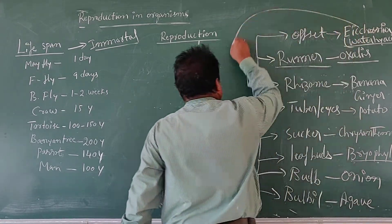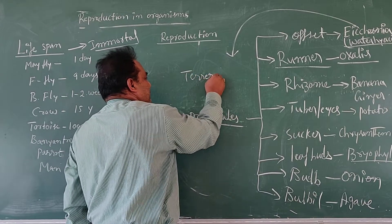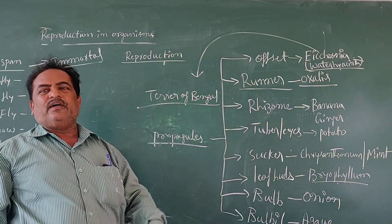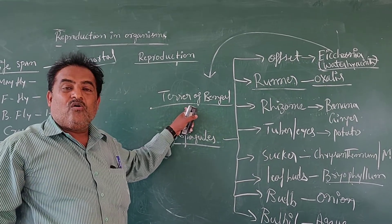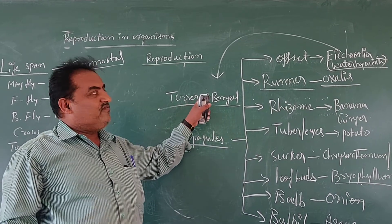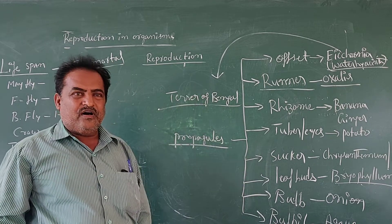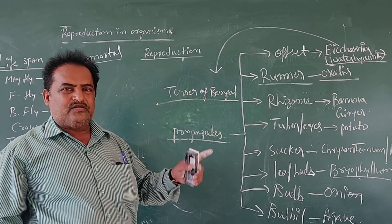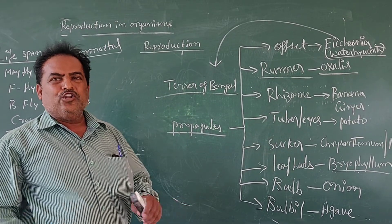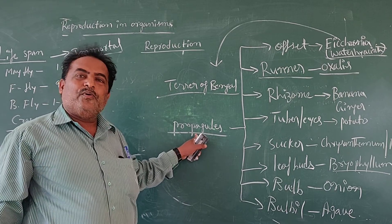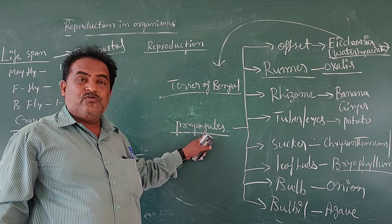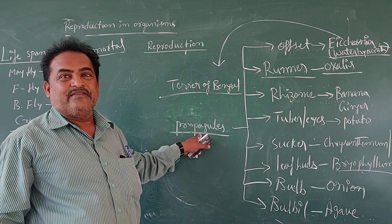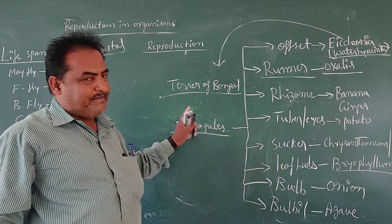Therefore this Eichhornia is also called the Terror of Bengal. It is called Terror of Bengal because excessive growth of Eichhornia in water causes damage to all aquatic organisms. These are the different structures which are involved for plant propagation and plant reproduction. These propagules, which are parts of plants, are involved for the production of new plants. In the case of agriculture, propagules play a very important role for the multiplication of plant bodies.